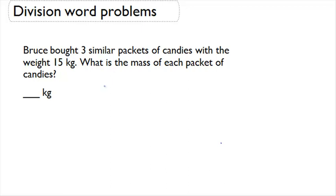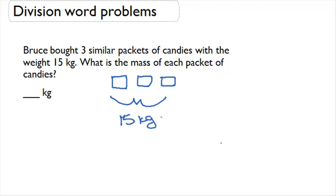So here we're dealing with three different packages. If they all weigh the same amount and all together they weigh 15 kilograms, then in order to figure out what each of the three weighs, we're going to divide our 15 by 3 and find that each one weighs 5 kilograms. So the mass of each packet is 5 kilograms.